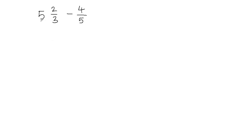To convert this into a fraction, first we're going to multiply the whole part with the fraction's denominator. The whole part is 5 and the fraction's denominator is 3, so we multiply 5 and 3 to get 15, and then we add that to the numerator. So 15 plus 2 gives us 17. The numerator will be 17 and the denominator will still remain 3.